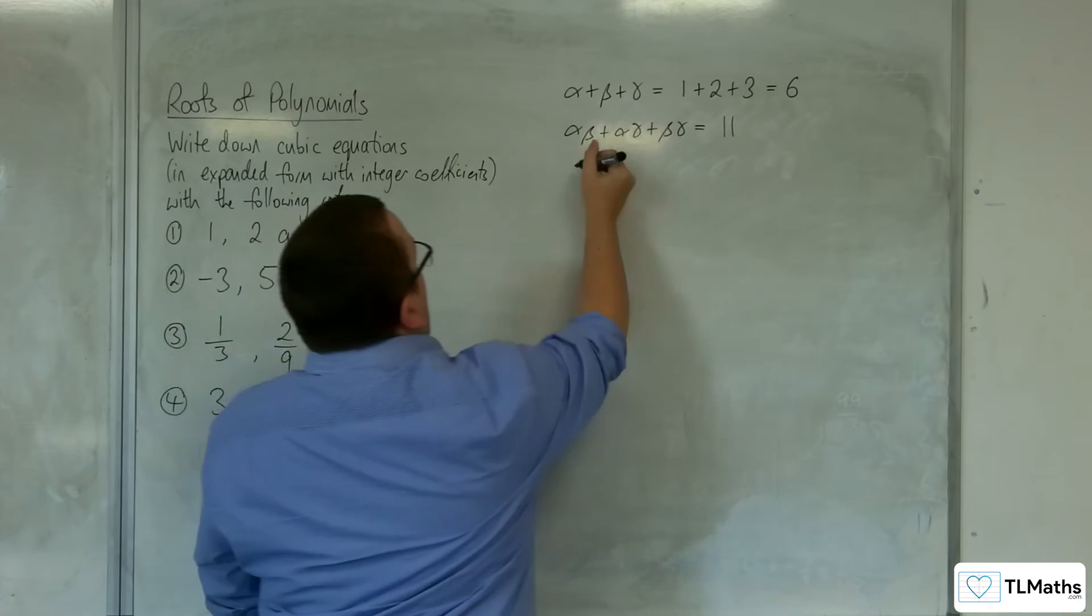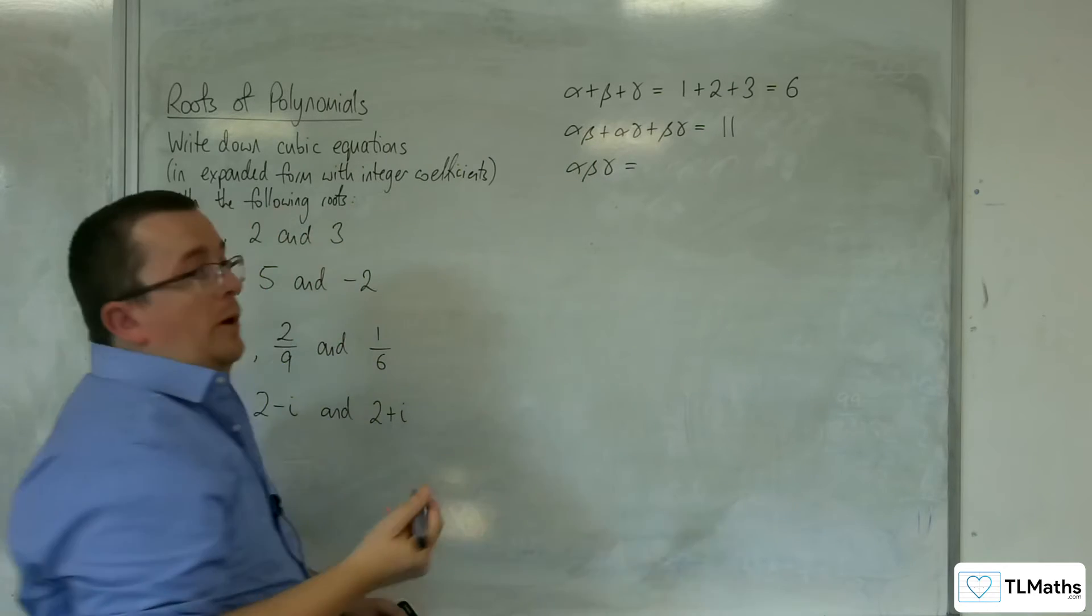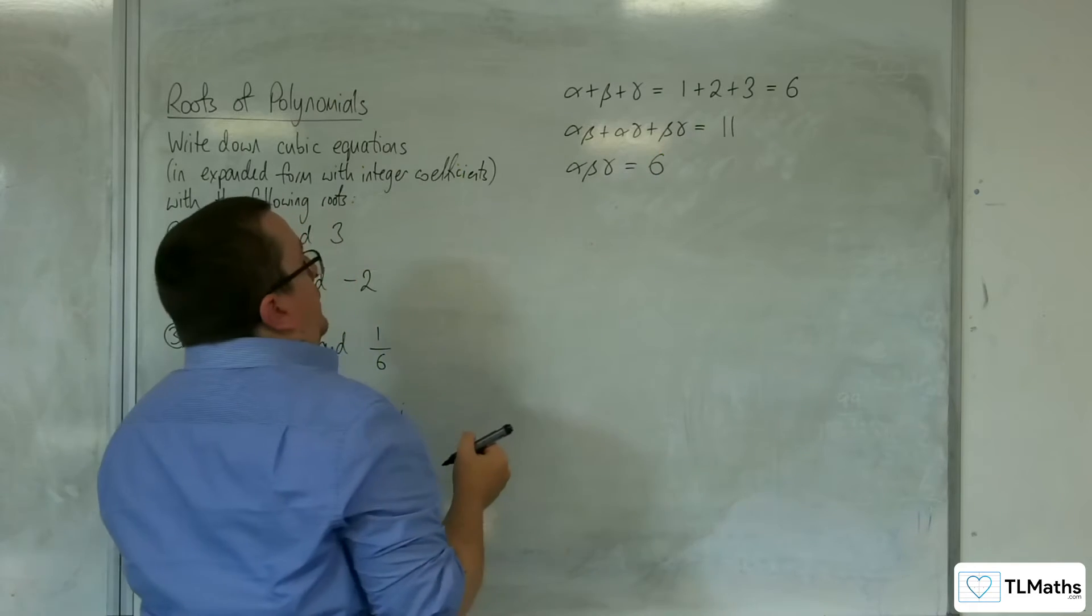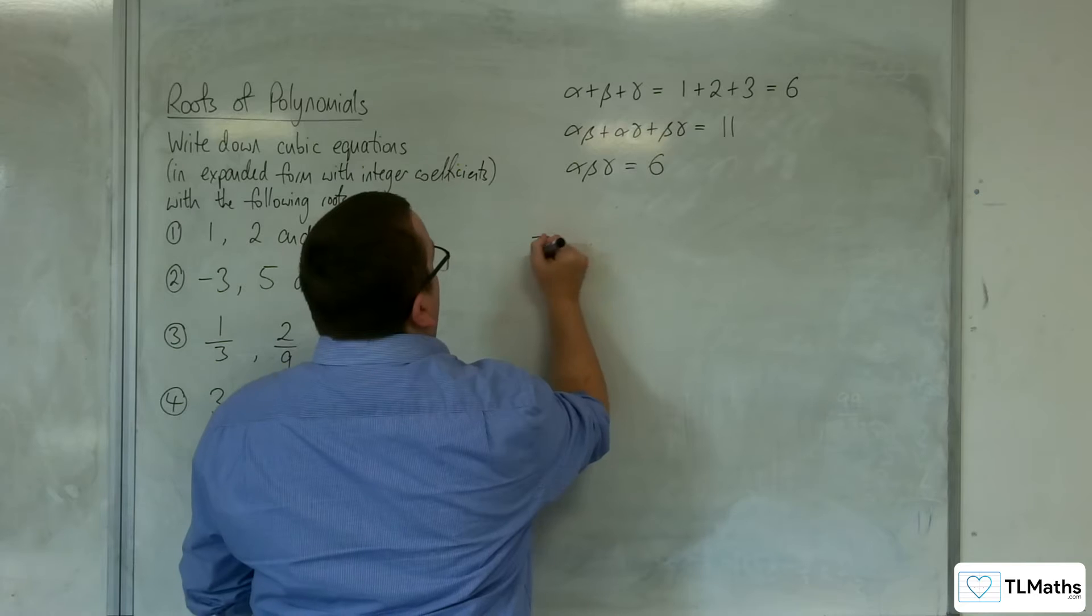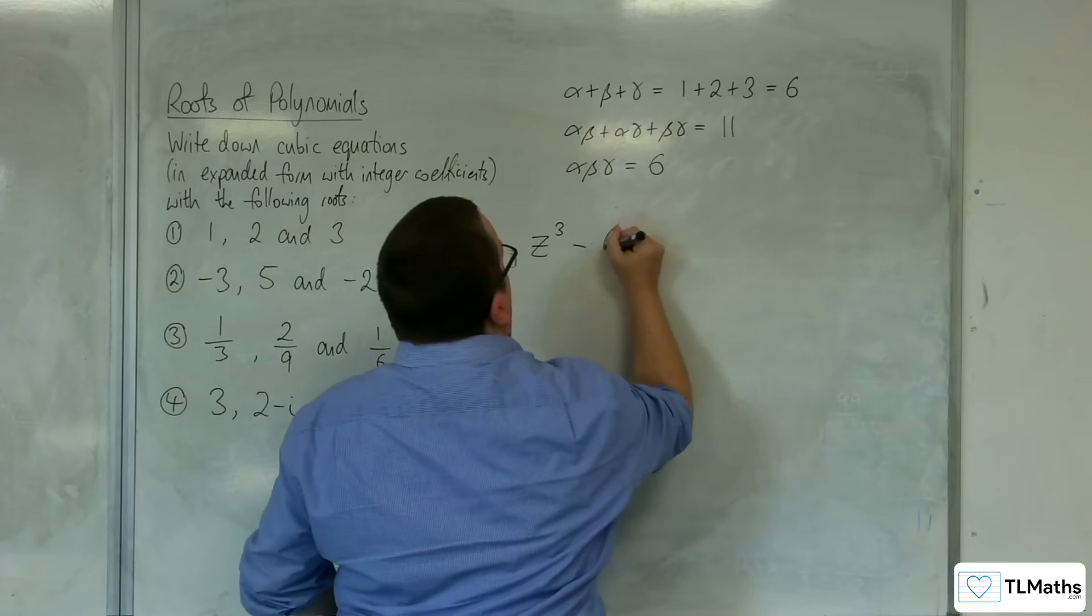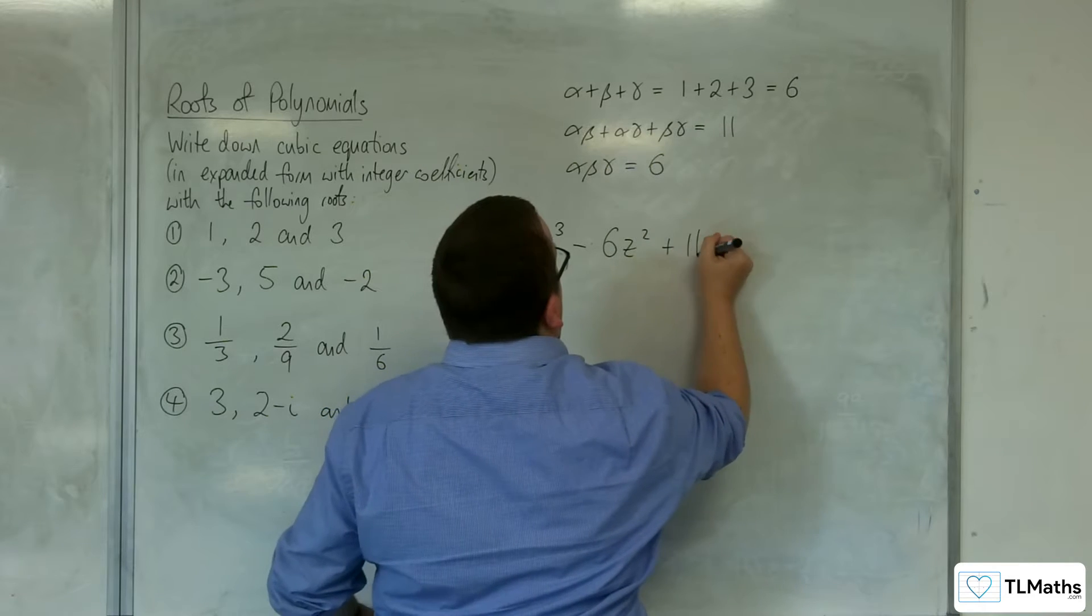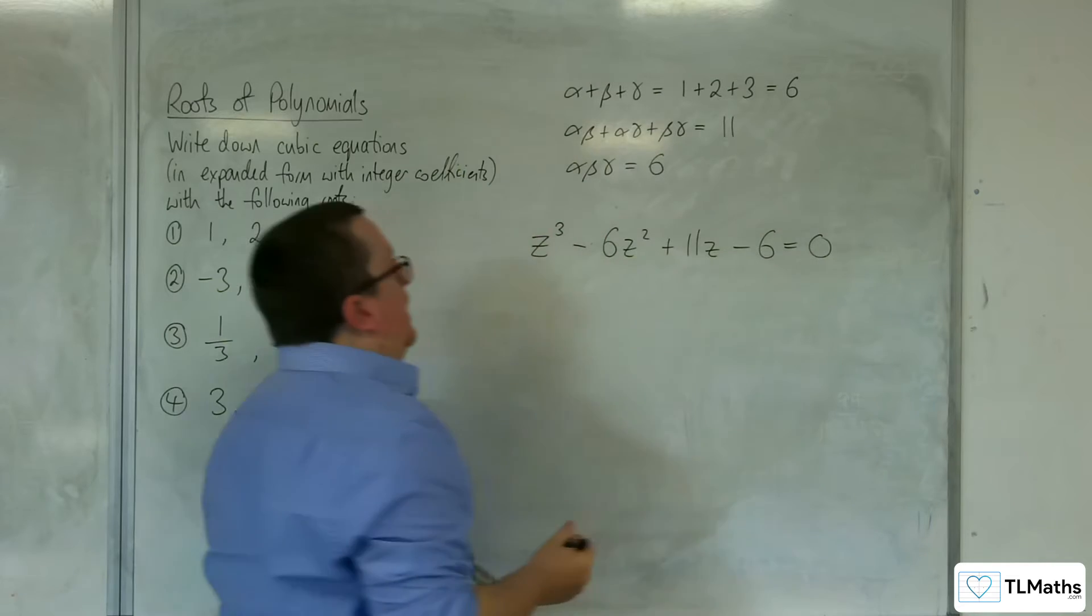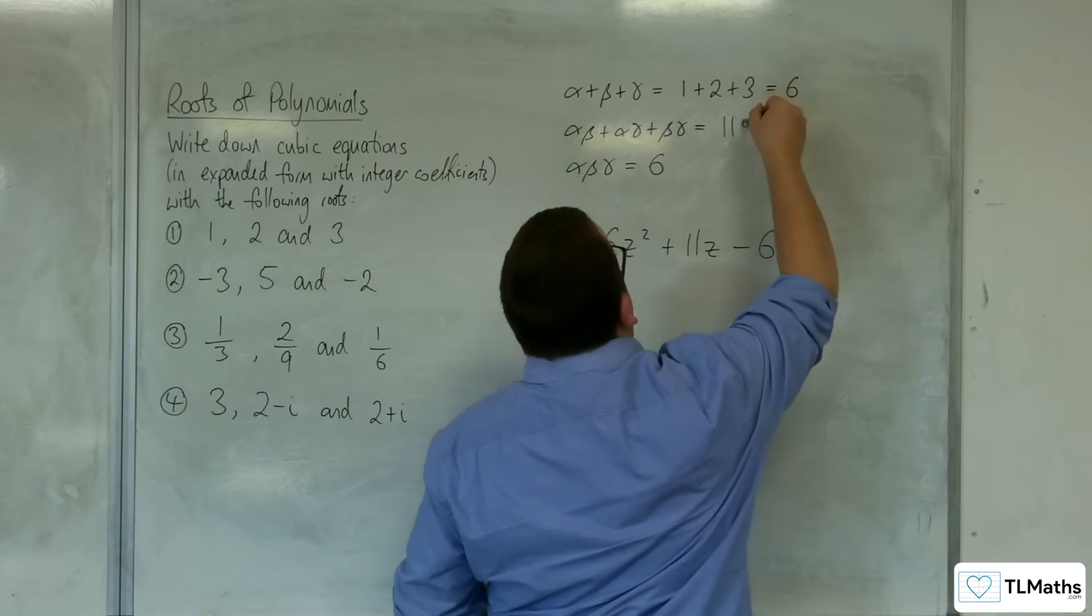Then we've got the product of the three roots, alpha beta gamma. So 1 times 2 times 3, which is 6. So then the cubic equation will be z cubed take away 6z squared plus 11z take away 6 equals 0. So we alternate going negative, positive, negative.